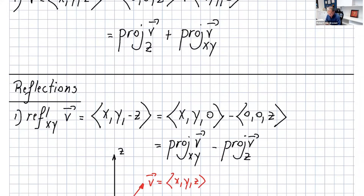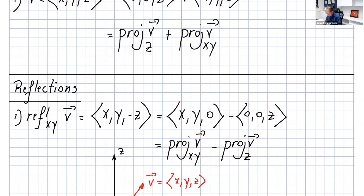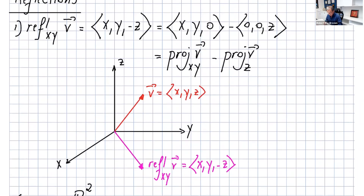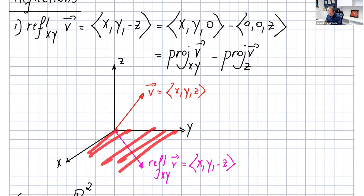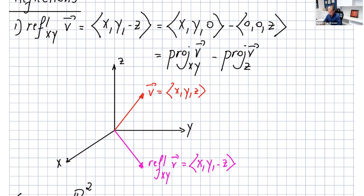Now, how do reflections work? The reflection of v across the xy plane: x and y don't change, but z becomes minus z. You can write it as (x, y, 0) minus (0, 0, z) — that's the projection onto the xy plane minus the projection onto the z-axis. Visually, you just flip the vector below the plane, making the z component negative.